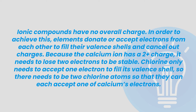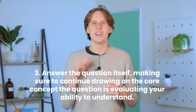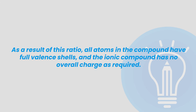Now we can discuss how this information relates to the question, as they would like us to explain why the ratio of calcium ions to chloride ions is as stated. Ionic compounds have no overall charge. In order to achieve this, elements donate or accept electrons from each other to fill their valence shells and cancel out charges. Because the calcium ion has a 2+ charge it needs to lose two electrons to be stable, and chlorine only needs to accept one electron to fill its valence shell. So there needs to be two chlorine atoms so that they can each accept one of calcium's electrons.